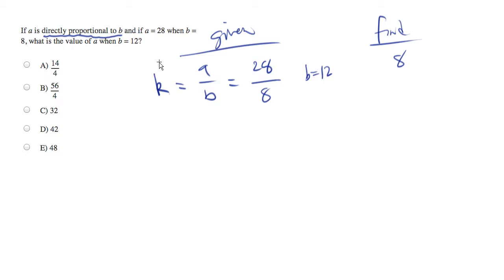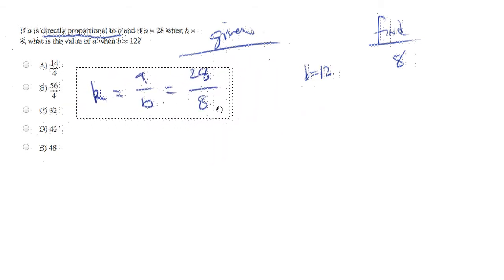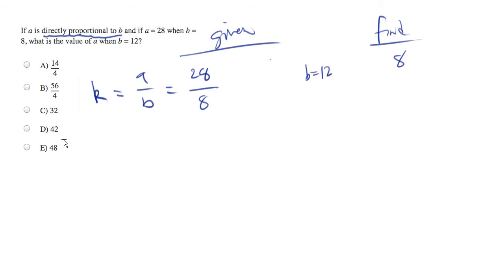Well, we could just keep using this same proportion over and over again. Let me move it over to give us more room. And we can keep going. So let's put B of 12 under here, and let's see what A equals.